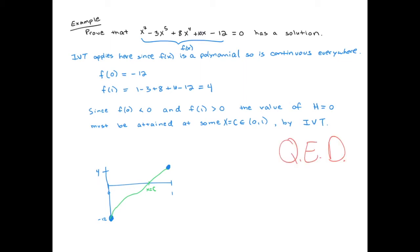It's always nice to draw a picture so you have some idea of what's going on. We've got some polynomial function, which is clearly continuous because all polynomials are continuous everywhere. The height of the function at x = 0 is negative 12, and the height at x = 1 is positive four. So therefore, it must at some point go through the intermediate height of zero, which means this polynomial does have a solution. I don't actually know where that x value is located — all I know is it's somewhere between x = 0 and x = 1. We're just proving existence in this proof.